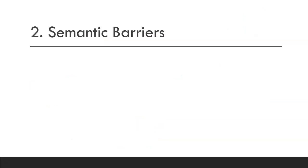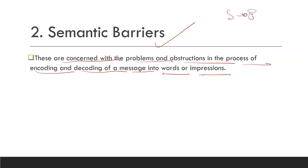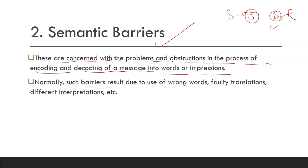Let's talk about the second barrier and that's called the semantic barrier. Semantic barrier refers to the problems and obstructions in the process of encoding and decoding of a message into words and impressions. Sometimes you get a lot of problems in terms of encoding and decoding. When the sender is encoding the message, errors can occur, and when the receiver is decoding it, there are high chances of error. These errors due to encoding or decoding are called semantic errors. Normally such barriers result due to use of wrong words, faulty translation, different interpretation, etc.